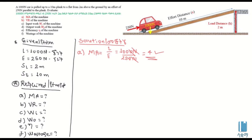So we have to make the advantage of it. We have to make the velocity ratio. We can look at the velocity ratio of the distance. When we compare it, we will note that the distance is SE over SL. This means effort distance. If you are able to reach the distance, then you will reach 10 meters.